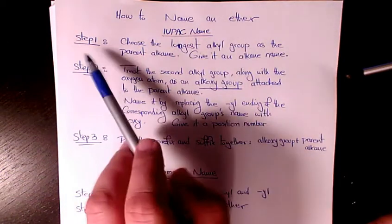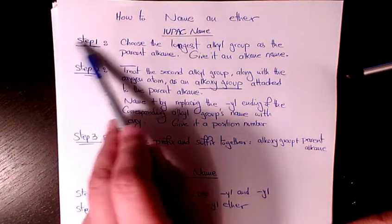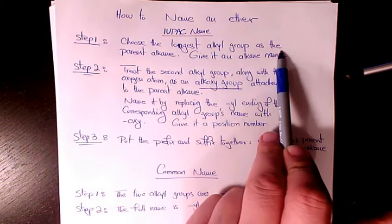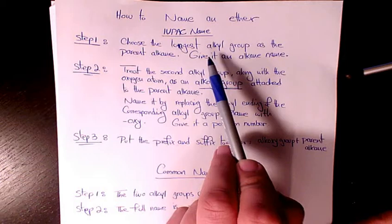In the IUPAC method, step one is to choose the longest alkyl group as the parent alkane and give it an alkane name.